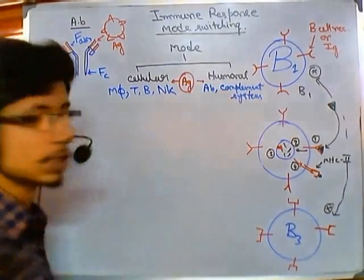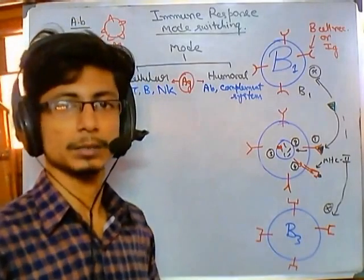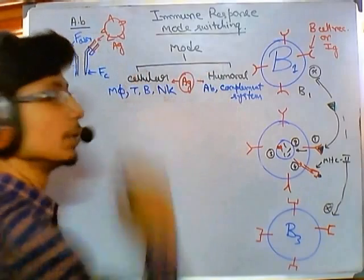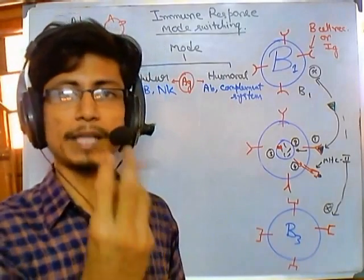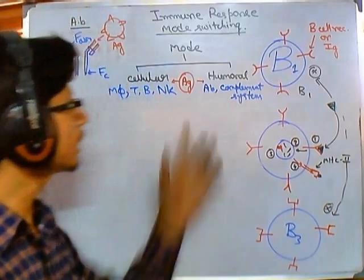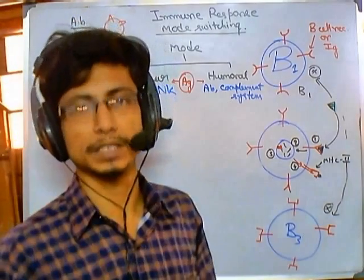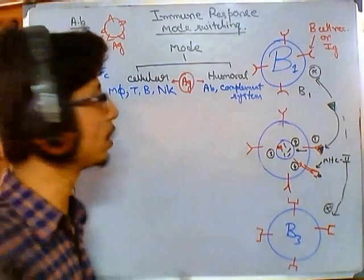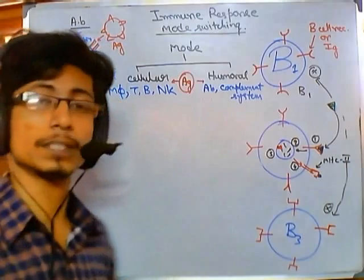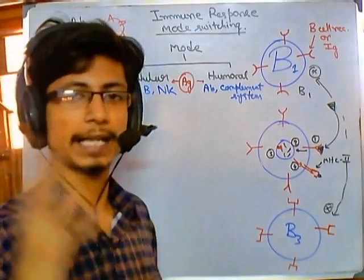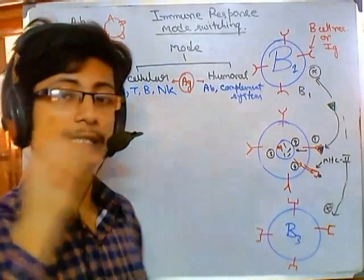It is very important to determine in what situation we choose humoral versus cellular mode. This is a critical task for the immune system — to detect and decide, based on the type of pathogen, which mode to take. In many cases, at the very beginning of the response, the cellular mode acts first, because humoral mode is very specific whereas cellular mode is non-specific — it can grab and degrade foreign invaders immediately.